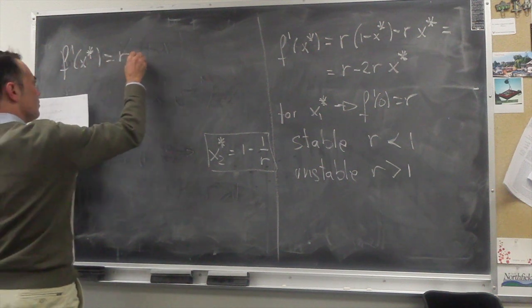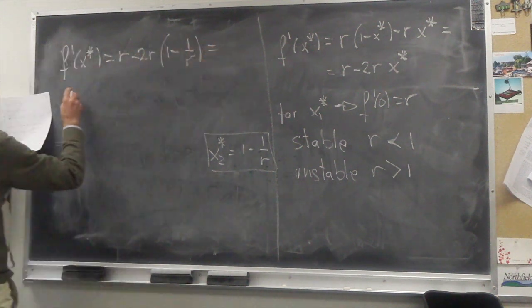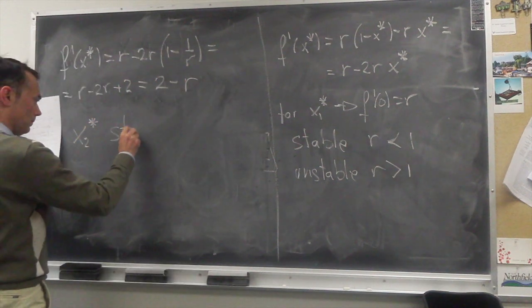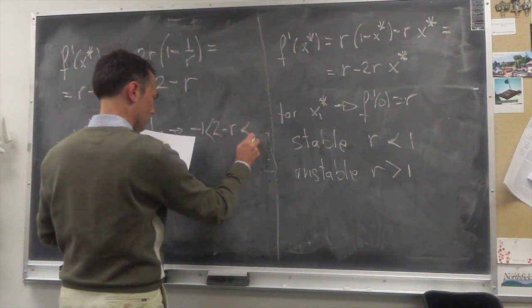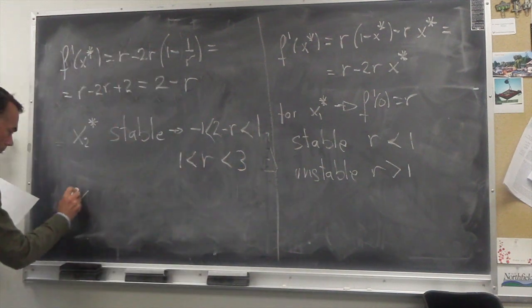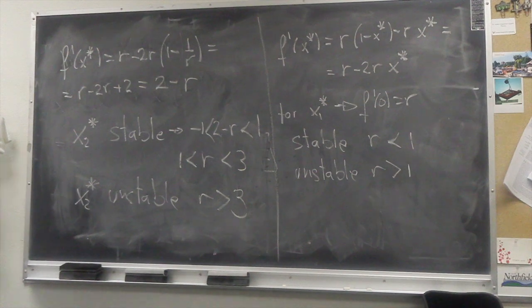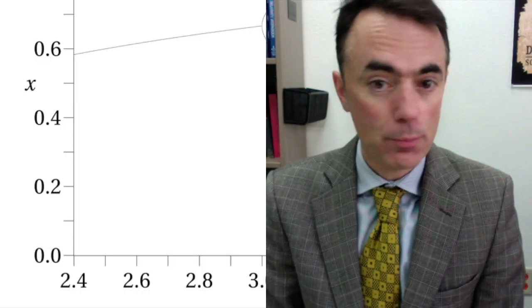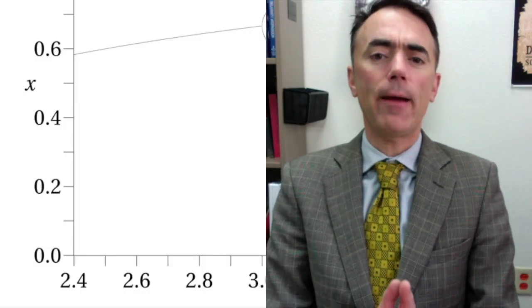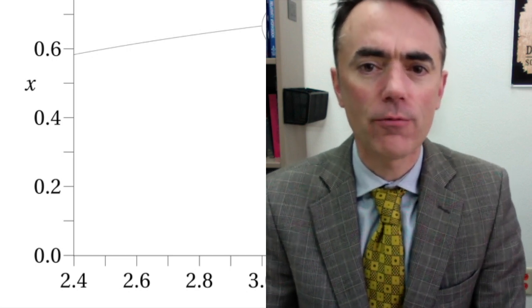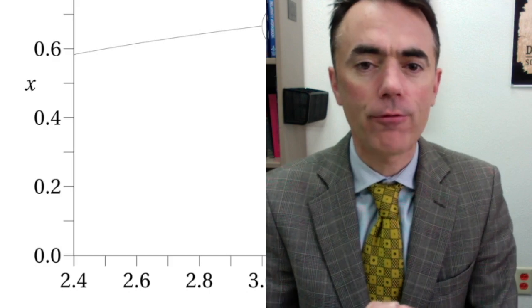For the other fixed point we substitute it in the derivative and get 2 minus r. The second fixed point will be stable for r between 1 and 3 and will be unstable for r larger than 3. This agrees perfectly with the bifurcation diagram, as the stability is that range where the population has a limiting value and remains there forever.